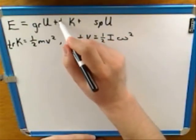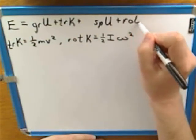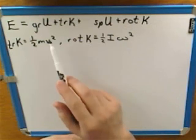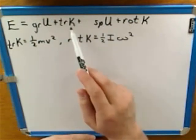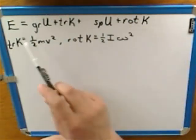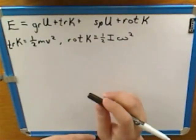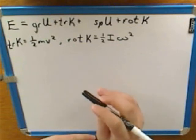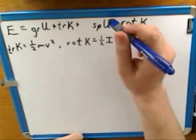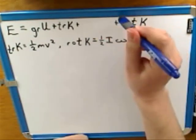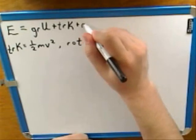So now we have four different types of mechanical energy: gravitational potential, spring potential, translational kinetic, and rotational kinetic. E stands for all these types of energy. In this chapter you're probably not going to work with springs, so I'll go ahead and erase the spring energy term for simplicity — if there were a spring, you'd have to include that term.